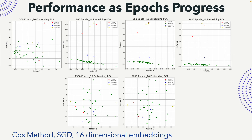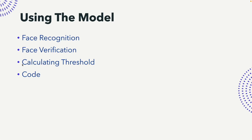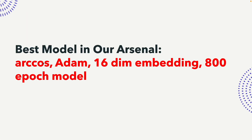So our best model is the R-cosine Adam configuration with 16-dimensional embeddings trained for 800 epochs. However, R-cosine does present problems by producing NaN values after about 800 epochs, so we need to investigate that further — and that is something we are currently working on.